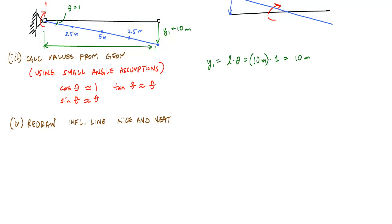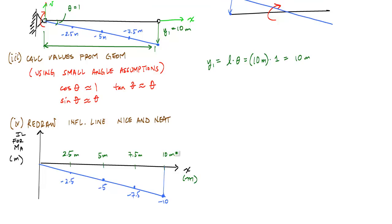So now, I want to just go ahead and redraw the influence line nice and clean. You notice these values are actually negative. These should be negative because they're below the x-axis. And if we say that displacement upwards is positive, this influence line will look like this. This is negative 10. And that's the influence line for the concentrated moment at A.